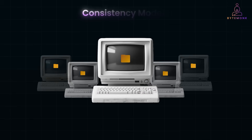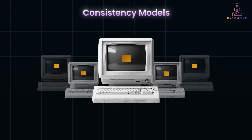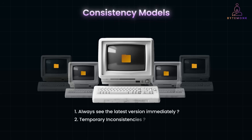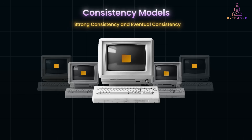Now let's talk about consistency models — one of the most important trade-offs engineers face when designing scalable storage systems. Consistency defines how soon updates made to a file become visible across the system. If multiple users are accessing a file at the same time, we need to decide: should they always see the latest version immediately, or can we allow some temporary inconsistencies in exchange for better performance and availability? These trade-offs lead us to two major consistency models: strong consistency and eventual consistency.